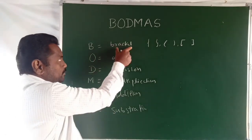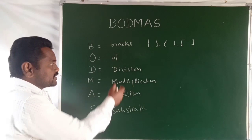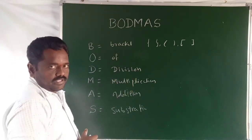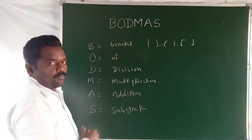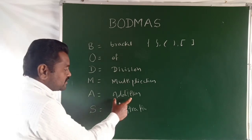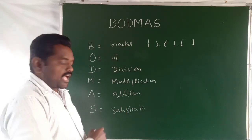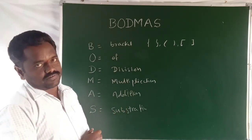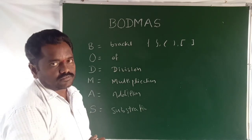And in those brackets, the order is first of all division, second one is multiplication, third one is addition, and fourth one, last one, is subtraction.